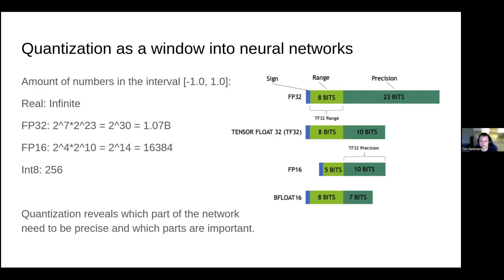It's important to compress information that is very dense with higher precision. In this particular work, we found some extreme outliers that need higher precision. These outliers are extremely important, and so with quantization, we could understand an important part of transformers that was previously overlooked.